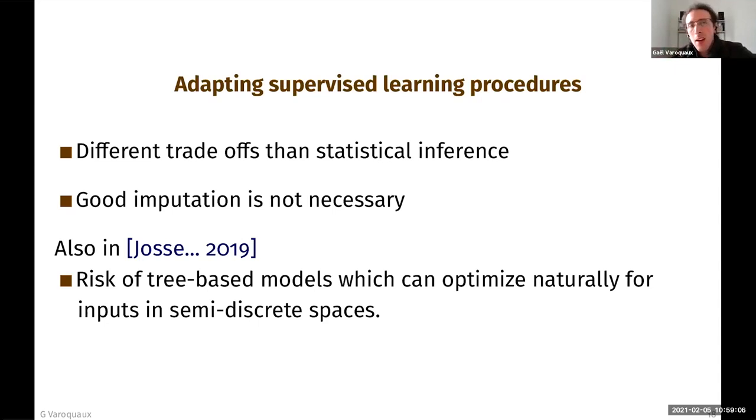And in our paper, we also looked at the risk of tree-based models, such as random forests. And these are interesting and they're used a lot with missing values because they can naturally optimize for inputs in semi-discrete spaces, just like they can naturally optimize for categorical data because they're basically performing a greedy combinatorial optimization. And they are very used in practice for the kind of data for which there is missing values.